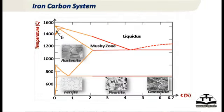The iron-carbon phase diagram is one most students learn. The liquidus line at the top defines where the metal is in liquid state. Between the liquidus and solidus line you have the mushy zone, a combination of liquid and solid. As it cools to room temperature, depending on how the casting solidifies, you can have ferritic at one end, pearlitic in the middle, and cementite at the other end, depending on cooling rates and the amount and form of graphite.